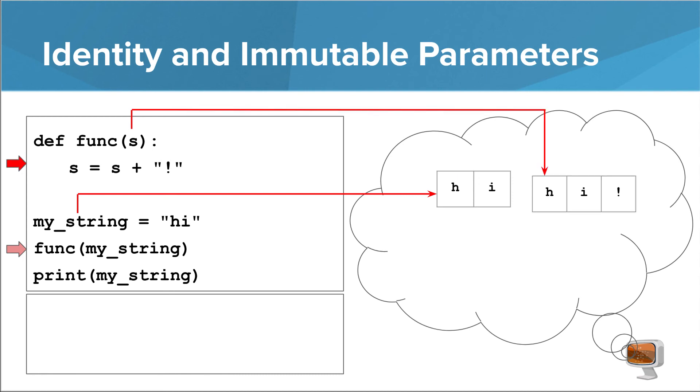But it doesn't matter, because all we do is completely replace S with a new string. MyString is intact, and S now refers to a different string that was created out of myString and an exclamation point. This new string doesn't survive past the end of the function, and myString is unchanged.